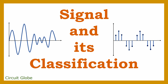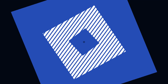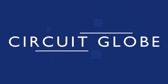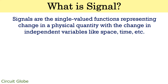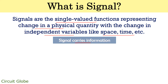Hey friends, I am Roshni welcoming you again to my channel Circuit Globe. Today we will see what is a signal and how we can classify it. Signals are defined as single-valued functions that show change in physical quantities with respect to change in independent variables like space, time, etc. In electrical and electronics, a signal is generally regarded as a variation in electrical quantities like voltage or current with respect to time. In general, it is said that a signal carries information.